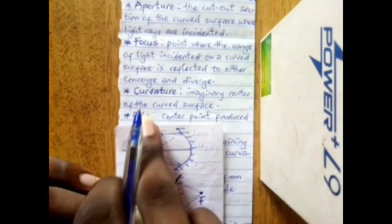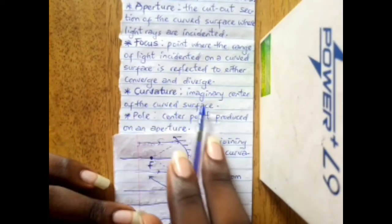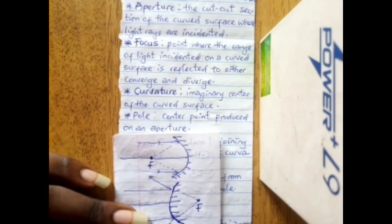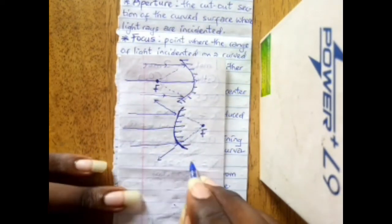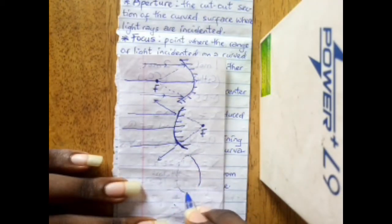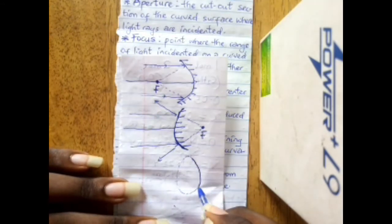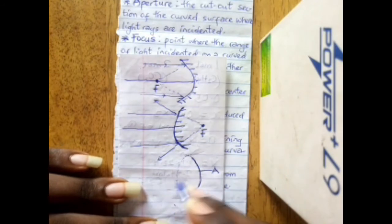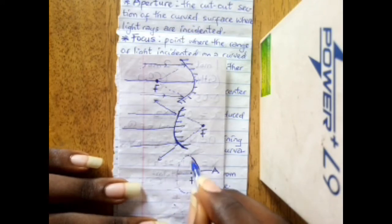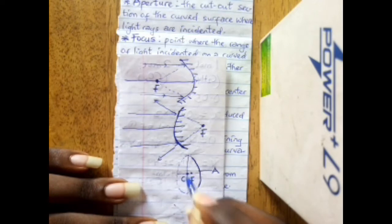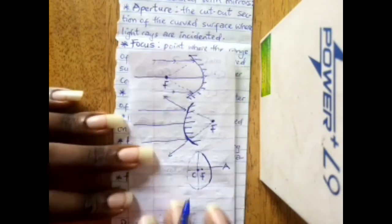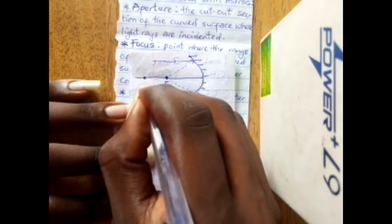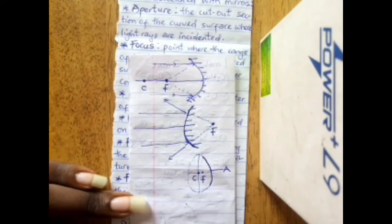Now we look at curvature. The imaginary center of the curved surface is what we refer to as the center of curvature. The aperture is just a cut-out section of the mirror — the mirror can be spherical or circular — but the imaginary center of that full mirror is the center of curvature, denoted C.